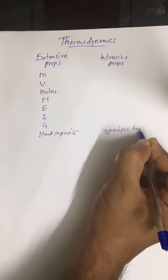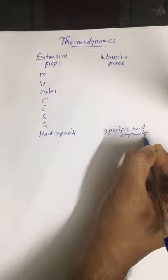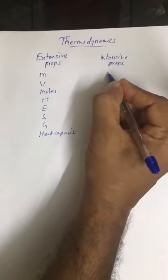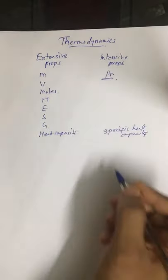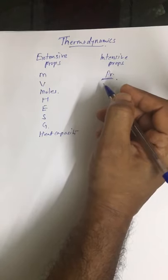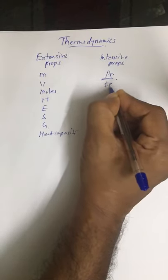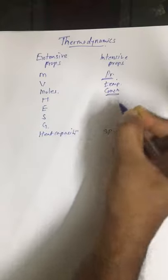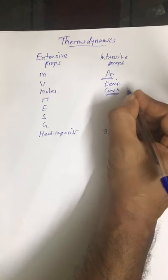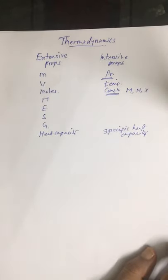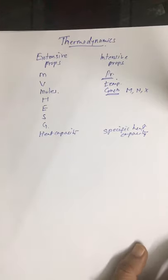Intensive properties are mass independent. For example, specific heat capacity becomes an intensive property. Similarly, pressure is independent of mass. We have pressure, temperature, and concentration factors — like molarity, normality, mole fraction, mass percentage, and volume percentage. All concentration factors are intensive properties.